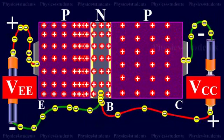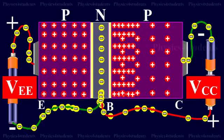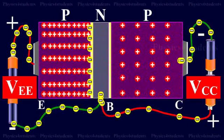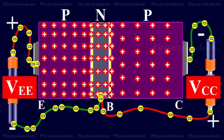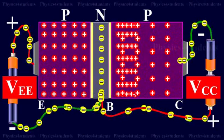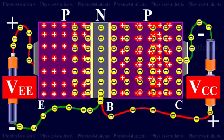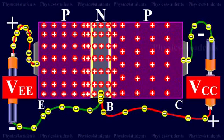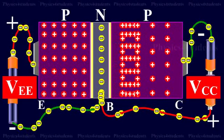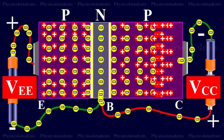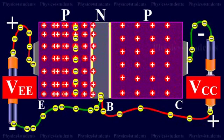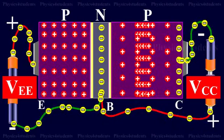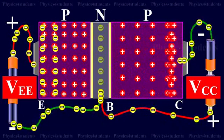The holes diffuse through the base and take a very small time to flow through this region before they reach the depletion region. During this time, a very small number of holes recombine with an equal number of electrons in the base. Because the base is lightly doped and very thin, this number is very small. The loss of electrons per second is made up by the flow of an equal number of electrons from the negative terminal of VEE into the base, and the flow of these electrons constitutes the base current IB.